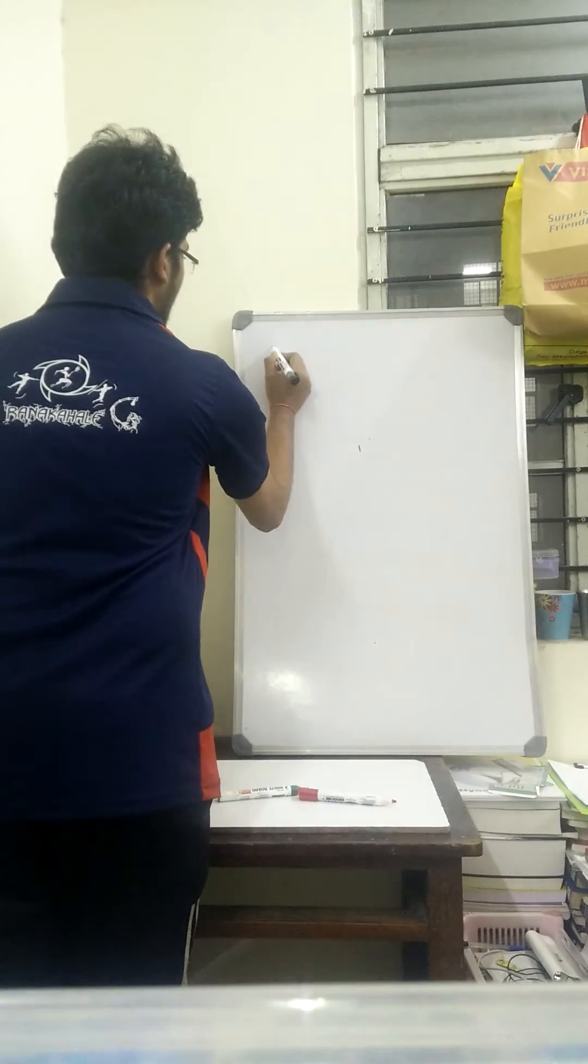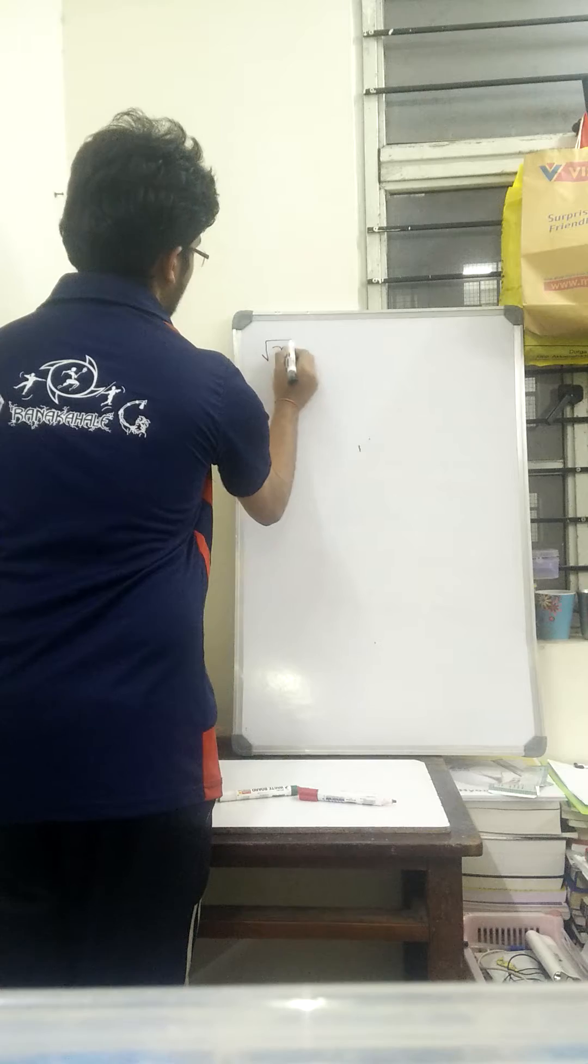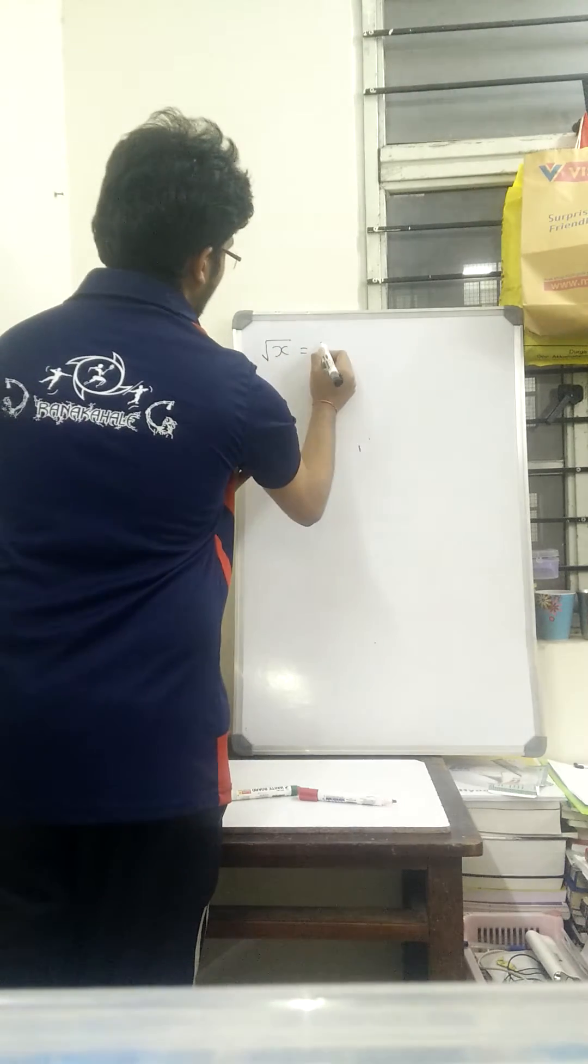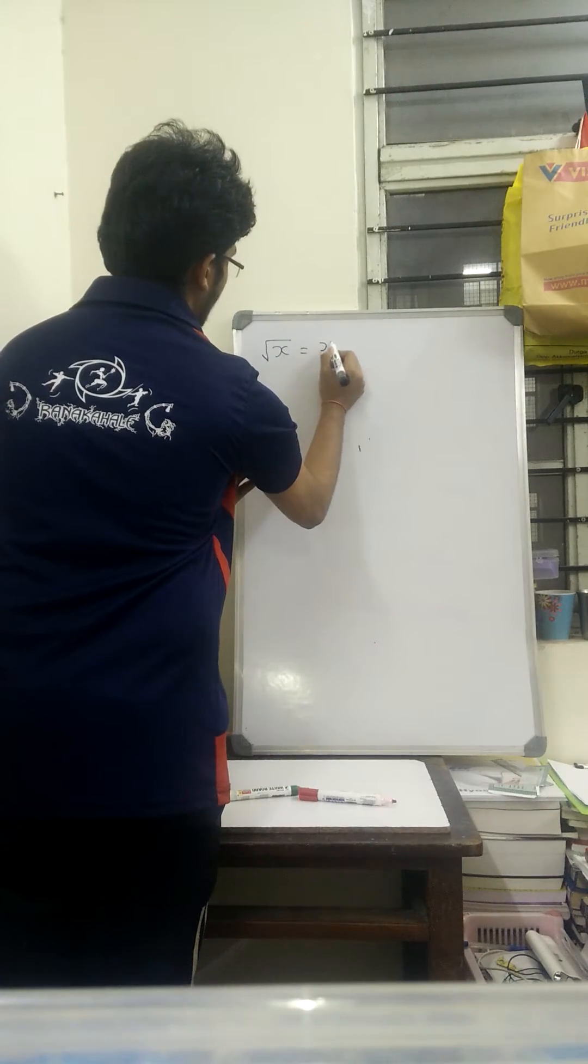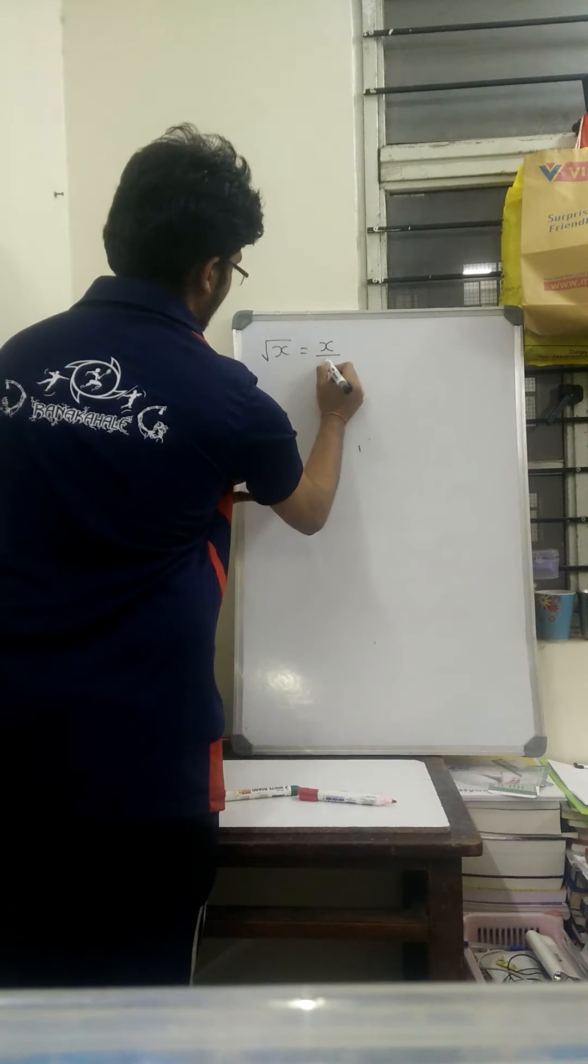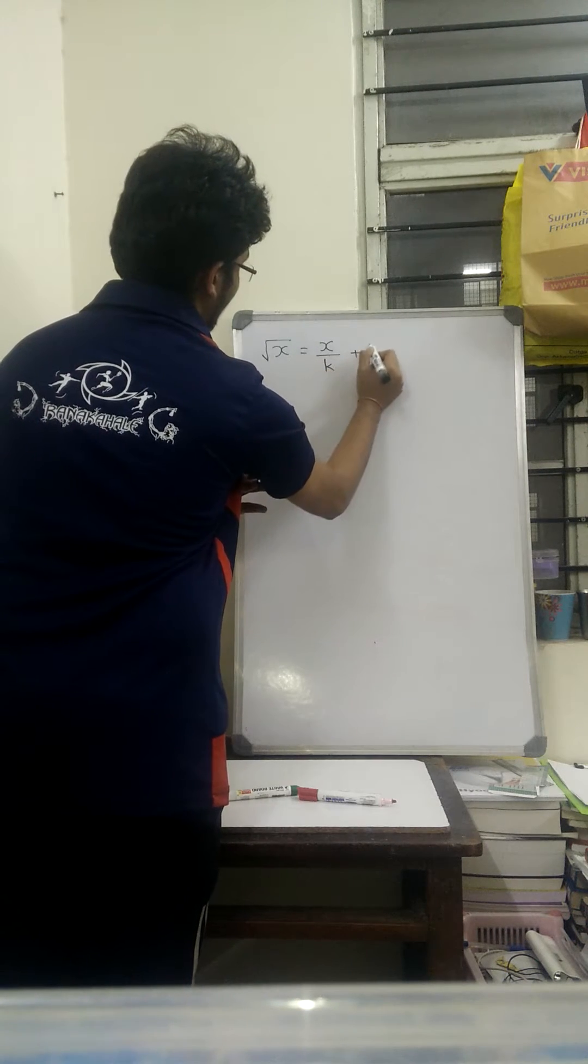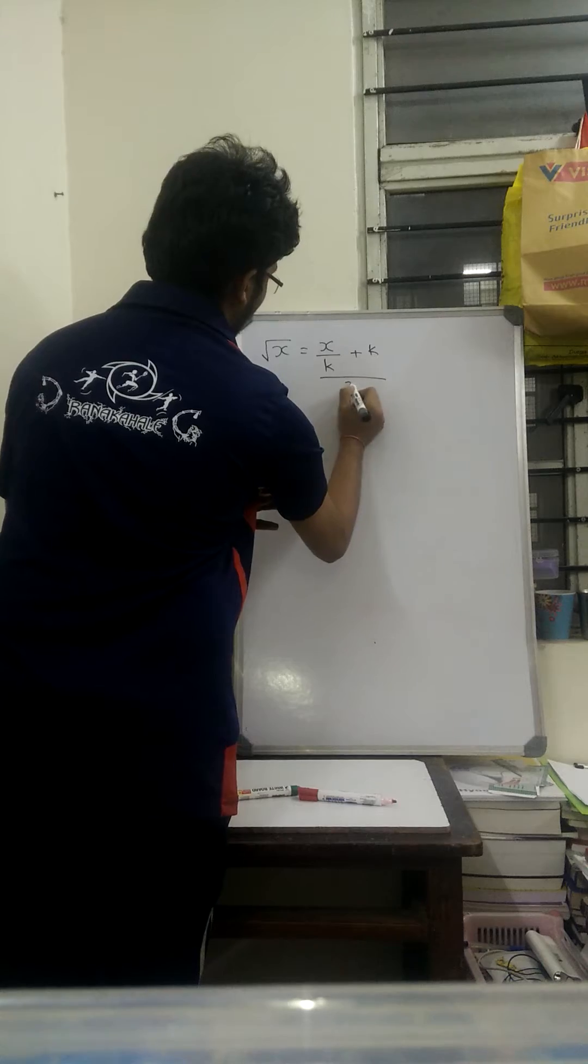Let's say I have to find square root of x. Then I can find square root of x using this formula. I divide x by nearest square root and I add it with the same number and divide the whole thing by 2.